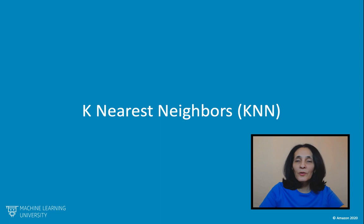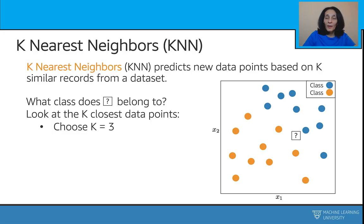Let's talk about the k-nearest-neighbor algorithm, also known as KNN algorithm. The k-nearest-neighbor algorithm is a supervised learning algorithm that can be used for both regression and classification problems that predicts new data points based on k-similar records from a dataset.